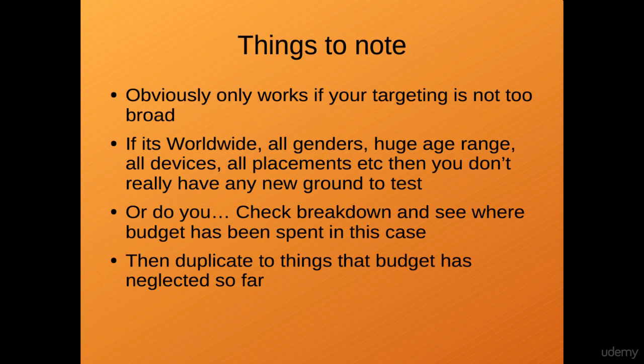To summarize: what you would do is just duplicate to things that the budget has neglected so far — in the example I just spoke about, that would be desktop because it only used 5% of the budget. That is the end of the section on scaling. I haven't provided a practical coverage of this because I'm working on case studies and you'll probably see me trying all sorts of different scaling methods within those anyway, so there's not really any point covering it here as an over-the-shoulder view.